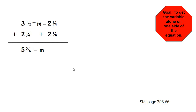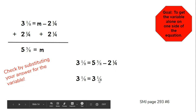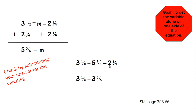As always, you have to check by substituting your answer for the variable. Wherever m is, we put 5 and 3 eighths: 3 and 1 eighth = 5 and 3 eighths − 2 and 1 fourth. Remember, 1 fourth equals 2 eighths. So 3 eighths minus 2 eighths equals 1 eighth, and 5 minus 2 equals 3. There we go — we are correct.